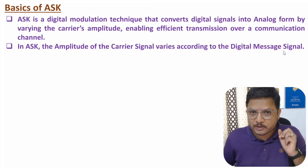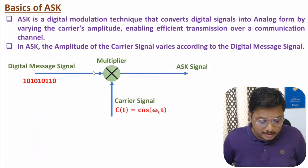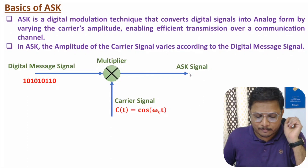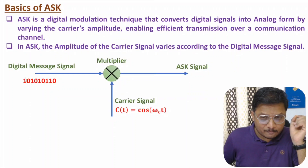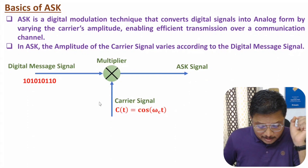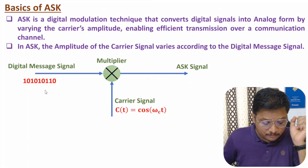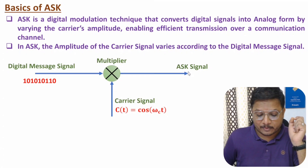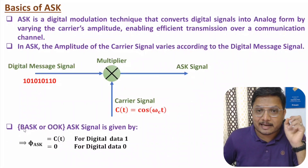In the modulation process, we have an input digital message signal and a carrier signal that is cos(ωc·t), a sinusoidal signal. We multiply these two signals and the resultant signal is ASK. For example, consider logic 1 with amplitude 1 and logic 0 with amplitude 0. If the message signal is logic 1, the ASK signal will be the carrier signal. If the message signal is logic 0, then 0 multiplied with the carrier gives 0.